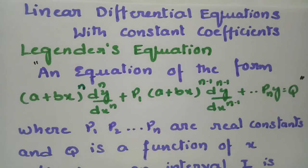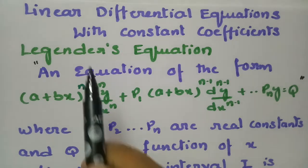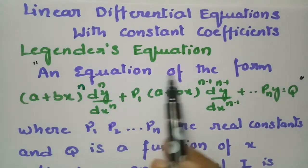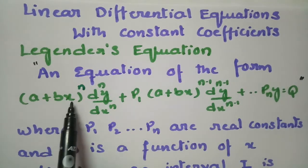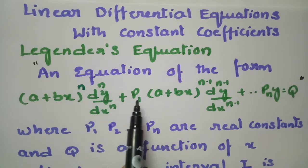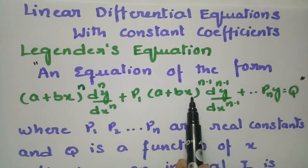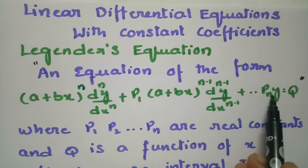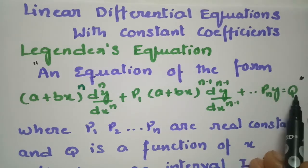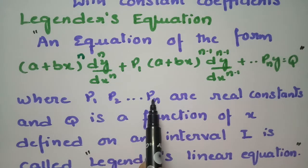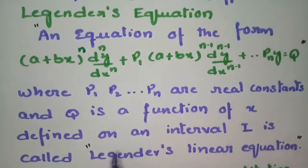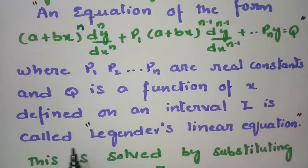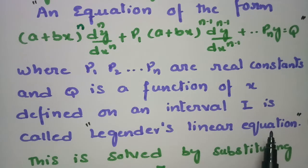Today's video is on Legendre's equation. This topic is from linear differential equations with constant coefficients. An equation of the form (a + bx)^n · d^n/dx^n + p1·(a + bx)^(n-1) · d^(n-1)/dx^(n-1) + ... + pn of y equals q, where p1, p2, ..., pn are real constants and q is a function defined on an interval I, is called Legendre's linear equation.